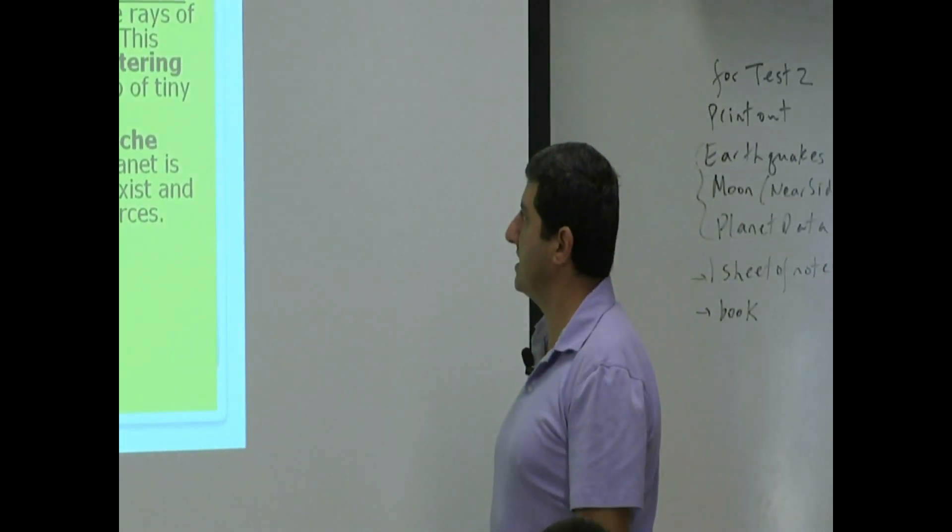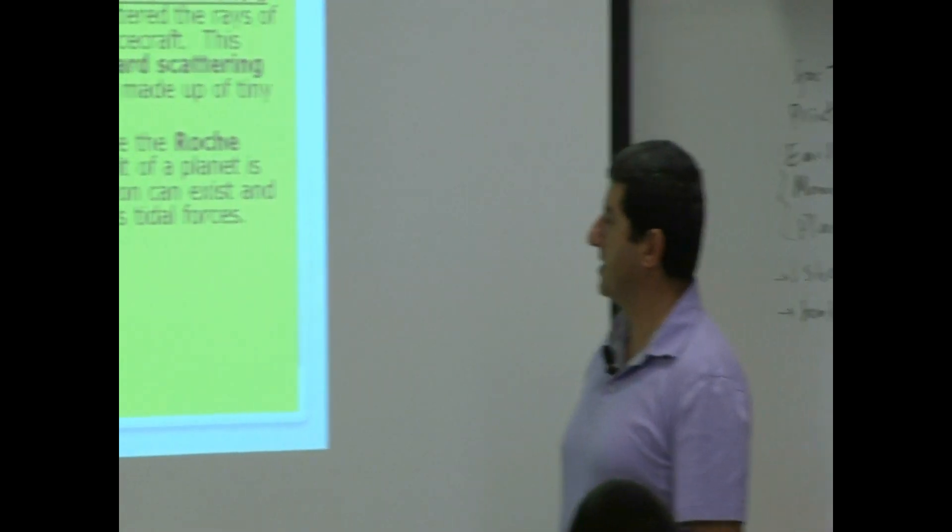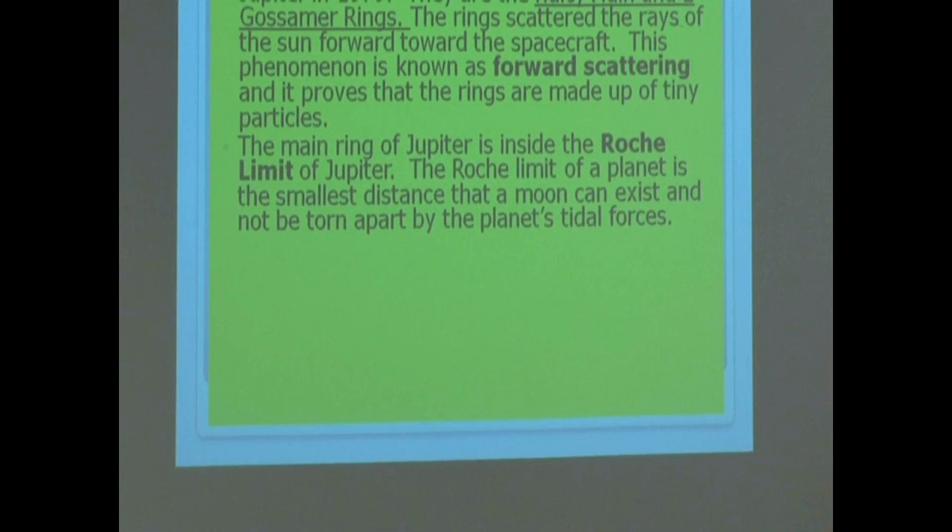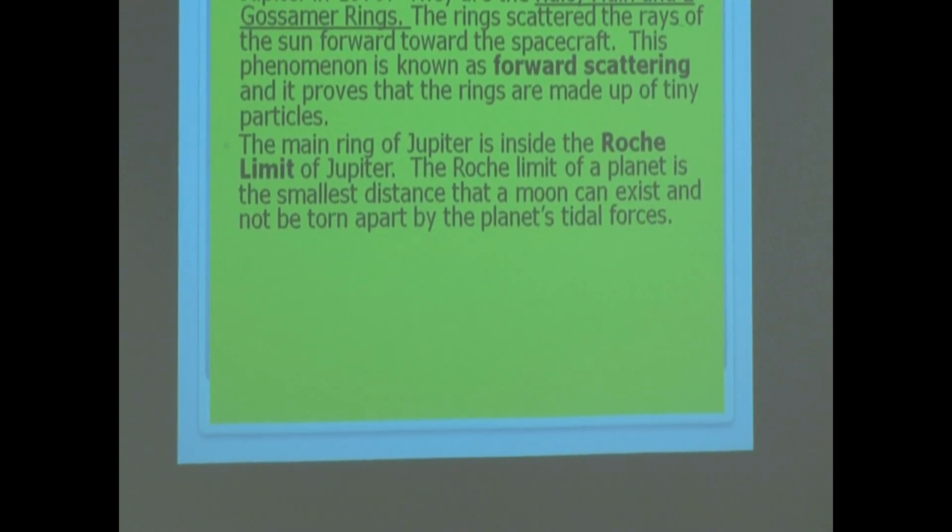The main ring of Jupiter is inside the Roche limit of Jupiter. The Roche limit of a planet is the smallest distance that the moon can exist and not be torn apart by the planet's tidal forces.